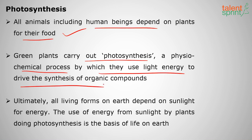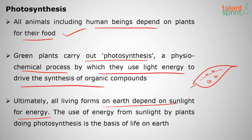Don't think only green plants perform photosynthesis. Suppose the color of a leaf is red — it can still perform photosynthesis because there is a green pigment inside, behind that red pigment. This green pigment called chlorophyll must be present, at least behind the red pigment. Ultimately, all living forms on earth depend on sunlight for energy, and the use of energy from sunlight during photosynthesis is the basis for life on earth.